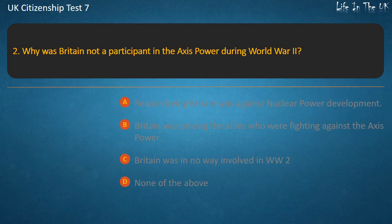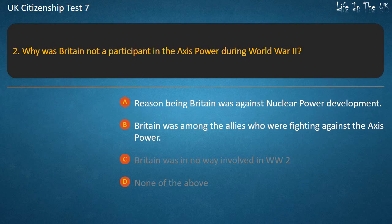Question 2: Why was Britain not a participant in the Axis power during World War II? Options: Britain was against nuclear power development; Britain was among the Allies who were fighting against the Axis power; Britain was in no way involved in WW2; None of the above. Answer: Britain was among the Allies who were fighting against the Axis power.